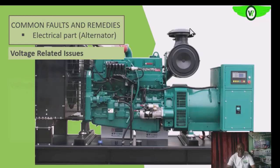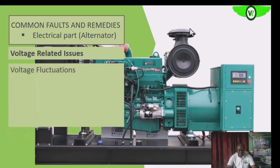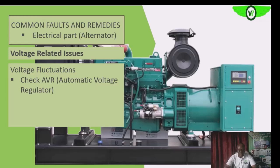The first is voltage fluctuations — that is, the voltage is going up or down. If that is the case, we want to check the excitation system. The AVR could be delivering an inconsistent current.